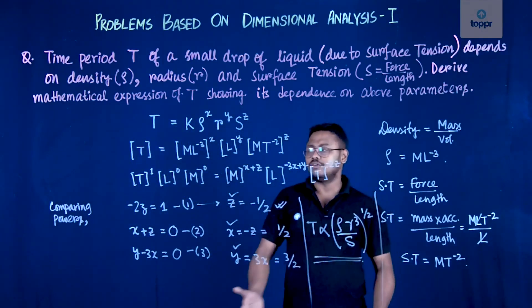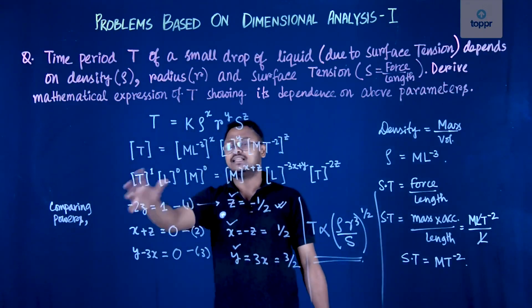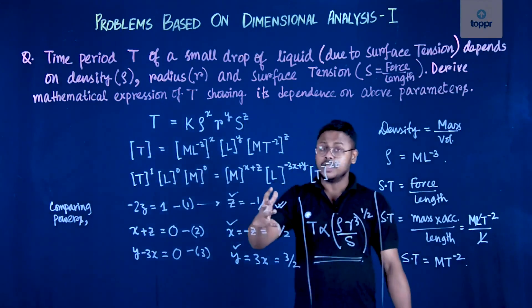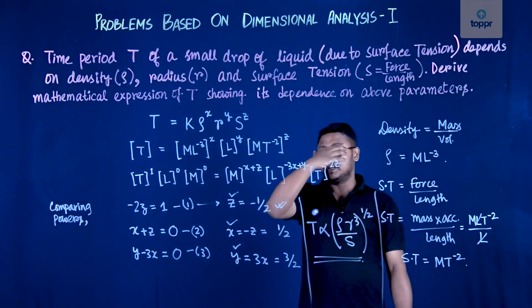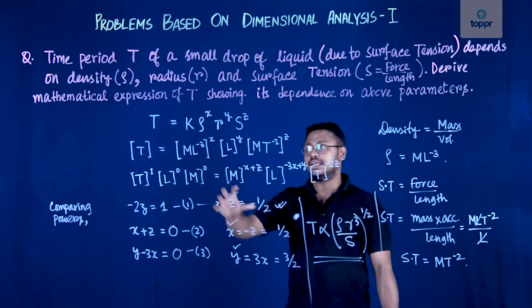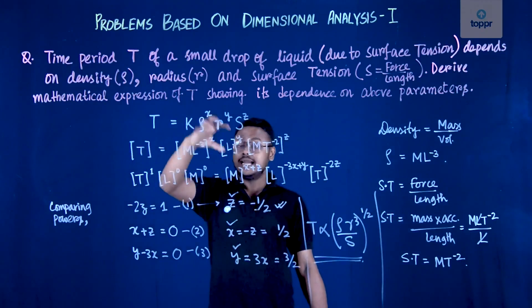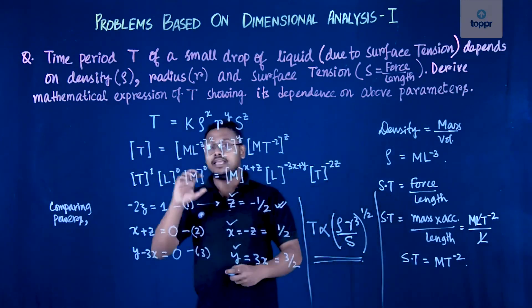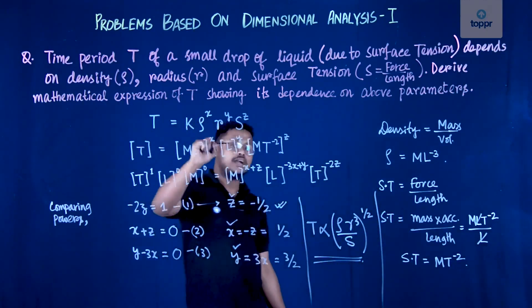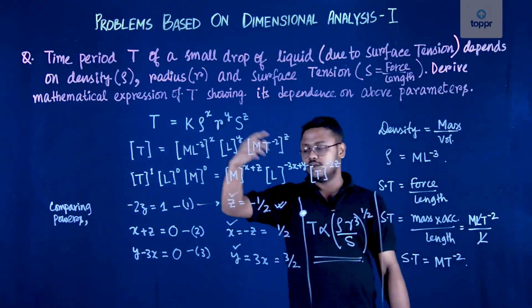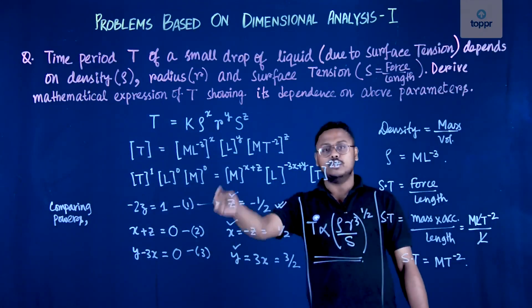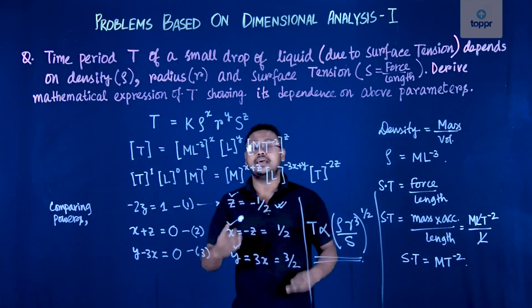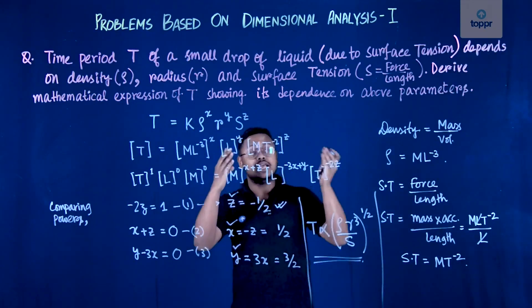So students, in this way — by solving simultaneous linear equations, assuming the power of each quantity, writing the dimensions of those quantities, and equating the powers of fundamental quantities on both sides — we can find the values of these unknowns. This is how the time period varies with the given parameters.